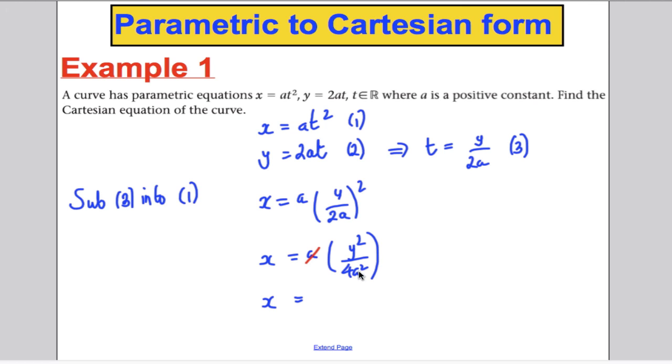x would then be equal to one of the a's here. There will be an a on top and cancels with one a here. x would therefore be y squared over 4a. And making y squared maybe the subject, y squared would therefore be 4ax.